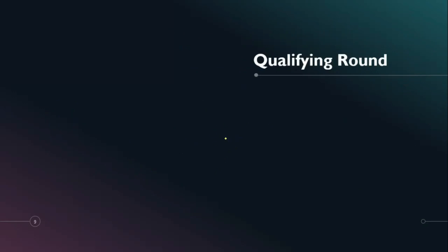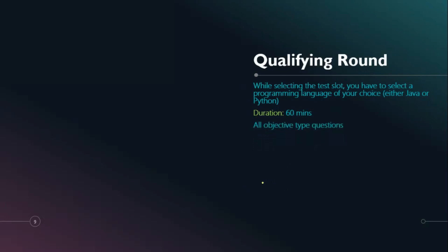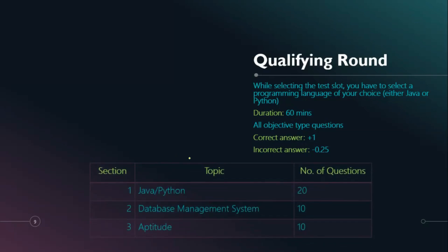Looking at the Qualifying Round in detail: when applying, you select a test slot and choose your programming language — either Java or Python. The duration is 16 minutes, all questions are objective type, and there is negative marking: correct answers earn +1 mark and incorrect answers earn -0.25 marks, so be careful about which questions you attempt.